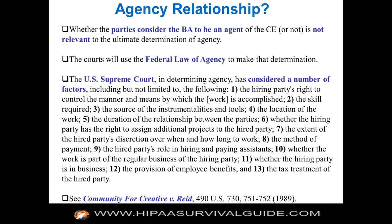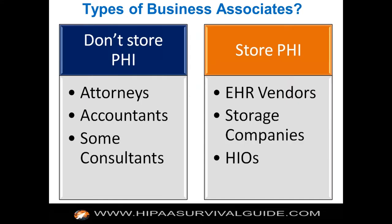That is the import of an agency relationship — something to watch out for. Agency is going to be determined by federal law of agency; the famous 1989 Supreme Court case Community for Creative Non-Violence versus Reid went through the factors. There are really no differences in treatment — there's no business associate 'lite' for attorneys, accountants, or consultants versus an EHR vendor. The regulations treat everybody equally.